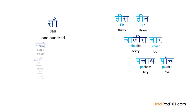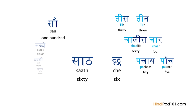However, this does not apply to all numbers. 60 in Hindi is Saath while 6 is Chai — as you can see, there is no common sound between them.